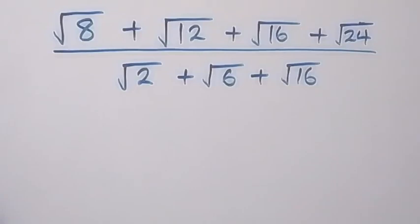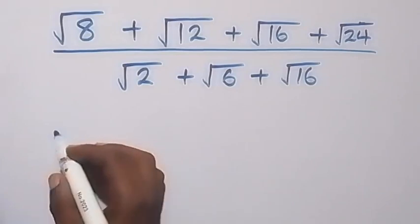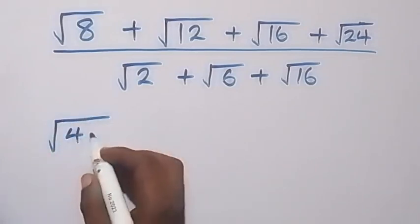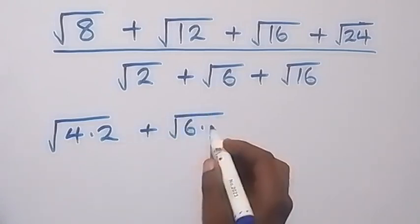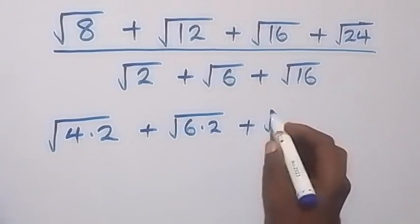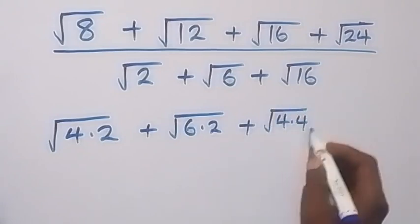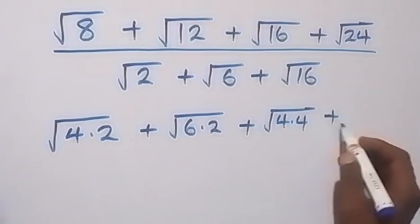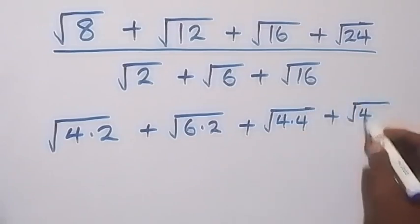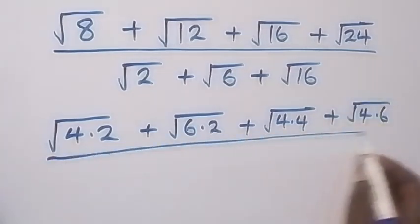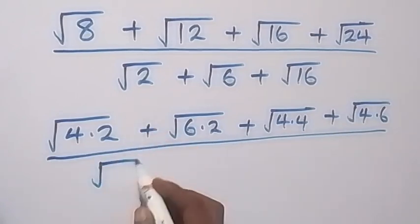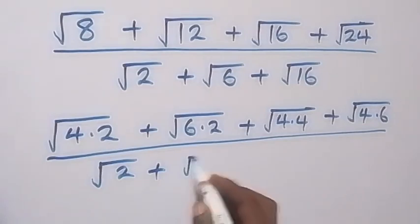Hello, you are welcome to Master T Math Class. How to solve this nice surd problem. Here we can rewrite this as root(4×2) plus root(6×2), then plus root(4×4), then plus root(4×6) from here. In the denominator, this same thing as root 2 plus root 6.